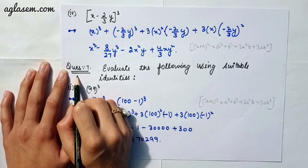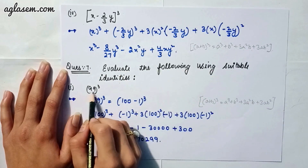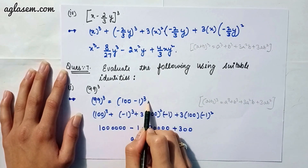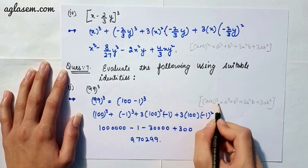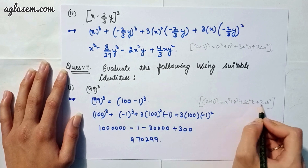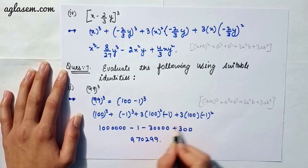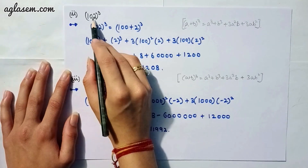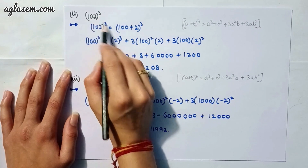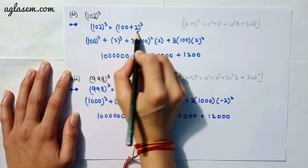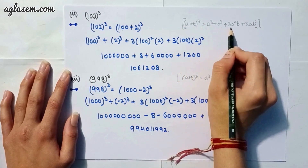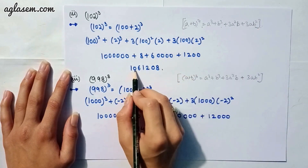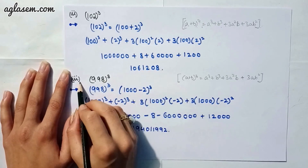Moving to our seventh question: evaluate the following using suitable identities. Part 1 says 99³. We write it as (100 − 1)³. Part 2 appears to be 102³, written as (100 + 2)³. Applying the formula (a + b)³ = a³ + b³ + 3a²b + 3ab², the answer for 102³ is 1,061,208.